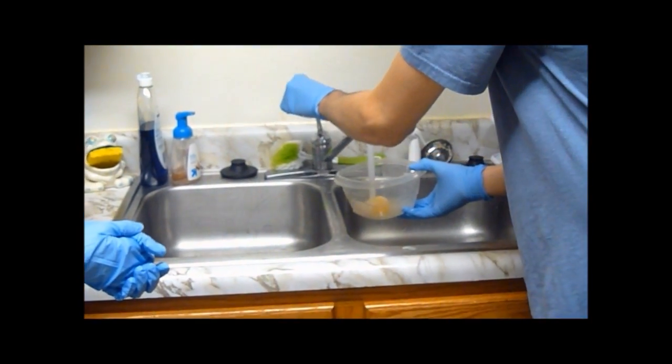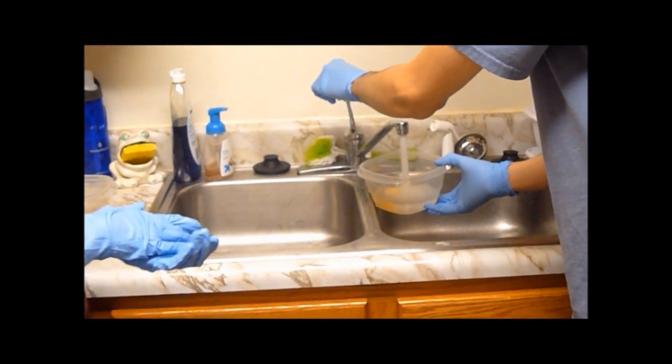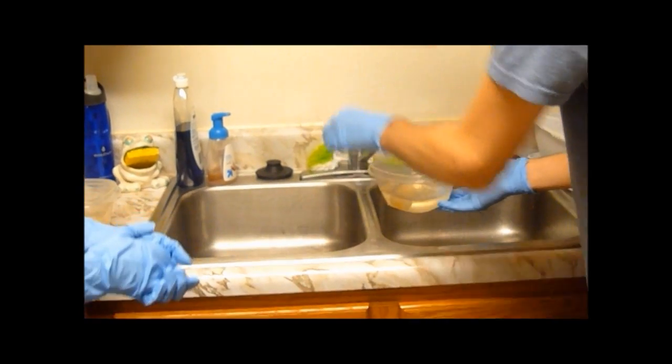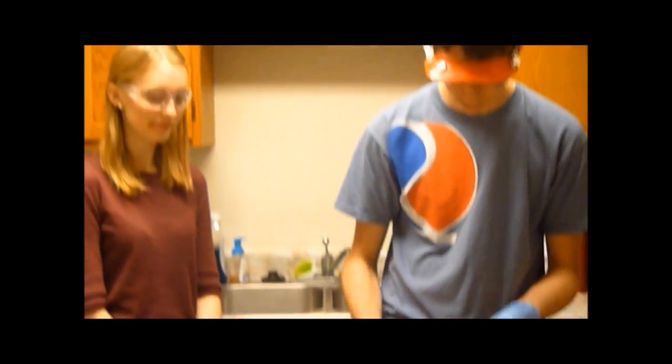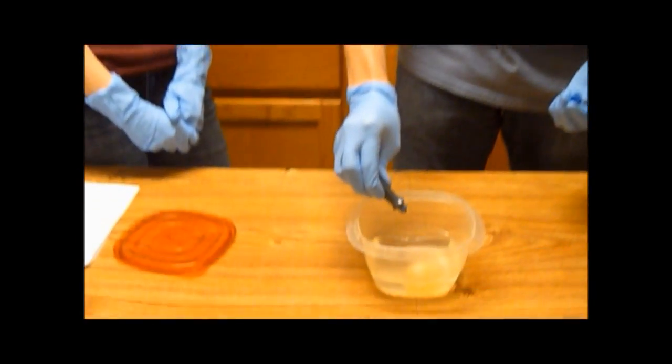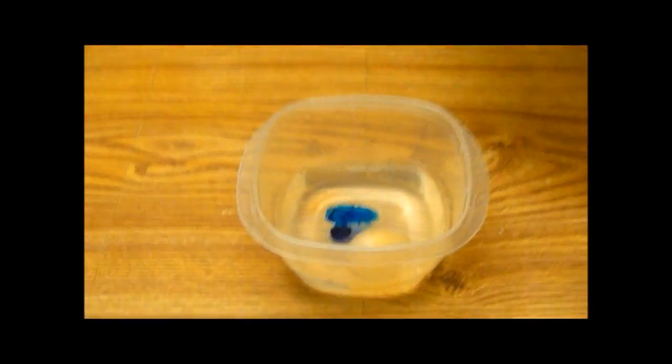And we're going to add some water and let it sit overnight one more time. Once again, just fill it up so it covers the egg. And this time, if you want to make the experiment a little bit more fun, you can add some food coloring. And the food coloring will actually go into the egg.